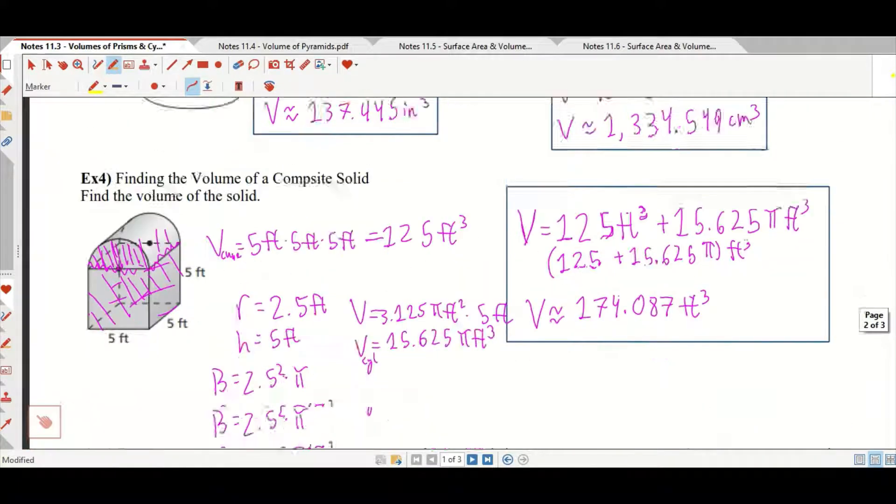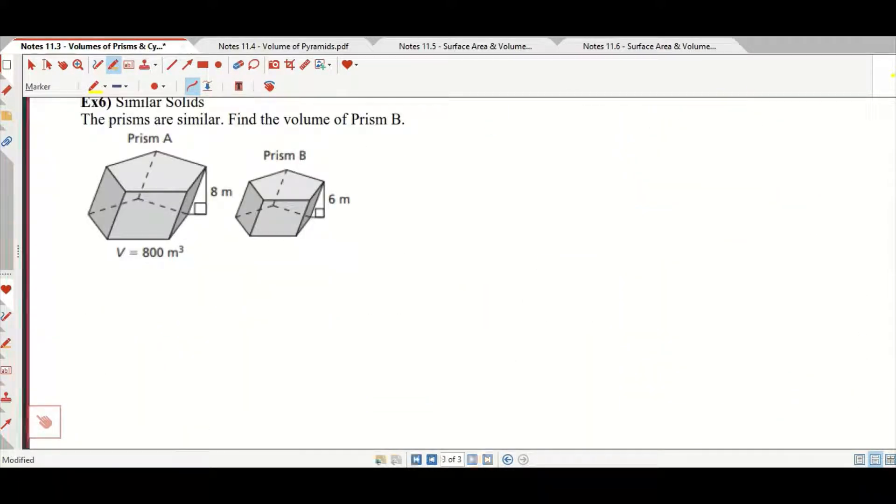Prism B is some amount shorter in height than prism A. And in order to get that, we're going to go 6 eighths, which is 3 fourths. That is 0.75. So prism B is 0.75 times shorter than prism A. And that's my k. K equals 0.75.